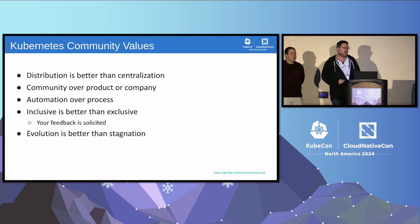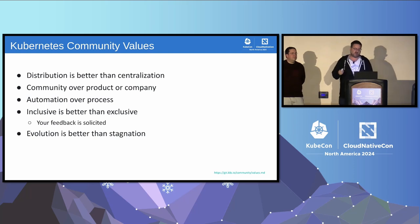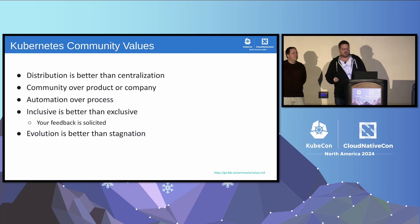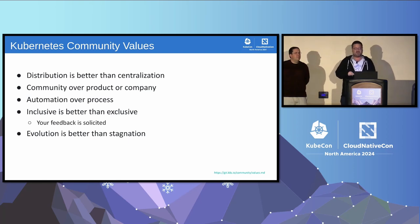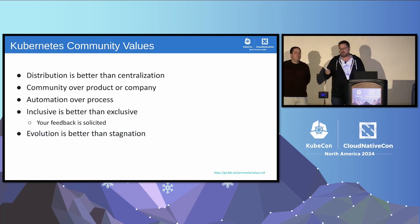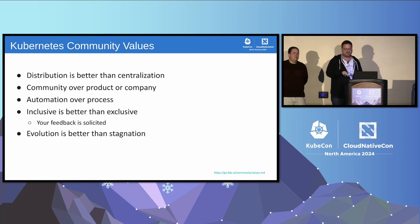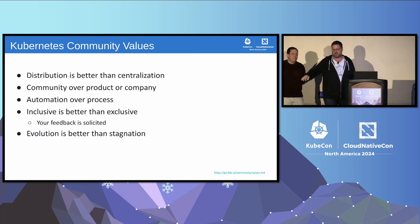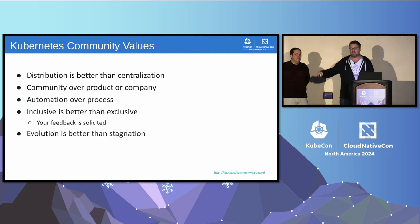We're also the SIG where we try to emphasize community values. If you look at some of these, a number of these really are values — but they're not code of conduct type values. These are technical values. Like, distribution is better than centralization. This is a sort of policy for how we structure our community, but it has consequences in the technical outcome of what we deliver.